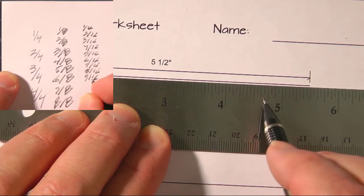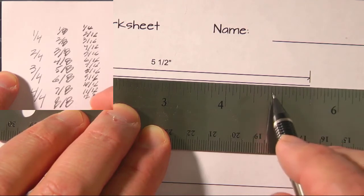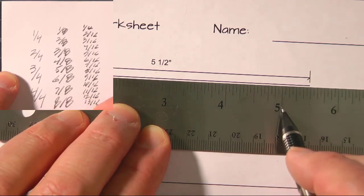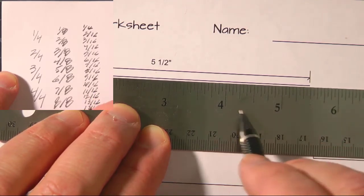Nine, ten, eleven, twelve, which is three quarters, thirteen, fourteen, fifteen, sixteen sixteenths, which is the full inch.